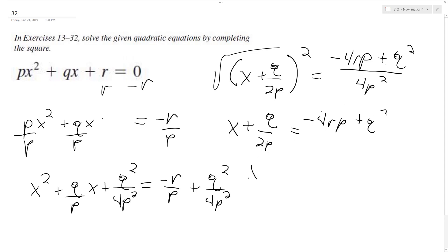Now if we subtract this, we end up with x is equal to, with a common denominator 2p. So we end up with the square root of negative 4rp plus q squared, and then minus, because you're subtracting, it's going to be 2pq all over 4p squared.